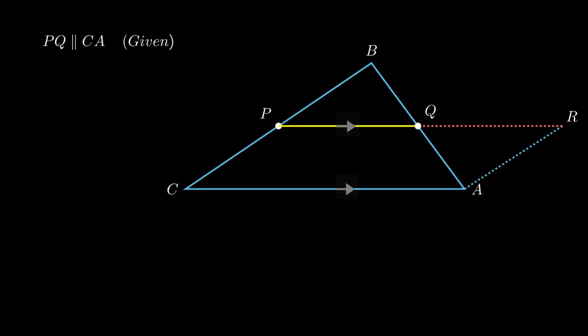As segment PQ is parallel to side CA and we know that segments of parallel lines are parallel, therefore segment PR is also parallel to side CA. By construction, segment PC is also parallel to segment RA.